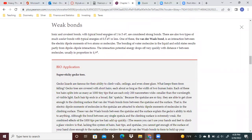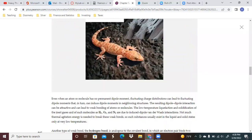Ionic and covalent bonds, with typical bond energies of one to five eV, are considered strong bonds. There are also two types of much weaker bonds with typical energies of 0.5 eV or less. One of those is the van der Waals bond, an interaction between the electric dipole moments of two atoms or molecules. The bonding of water molecules in the liquid and solid states results partly from dipole-dipole interactions. The interaction potential energy drops off very quickly with distance r, usually in proportion to one over r to the sixth. That's pretty sharp.